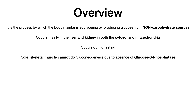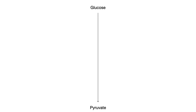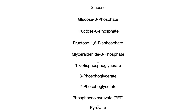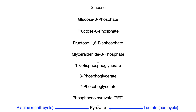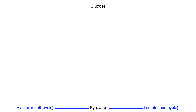The way to conceptualize gluconeogenesis is to think of it as glycolysis in reverse. In glycolysis, you start with glucose and end with pyruvate, with many intermediate steps most of which you don't need to know for USMLE or COMLEX. Pyruvate can then be shuttled to lactate through the Cori cycle or to alanine through the Cahill cycle. Those two cycles allow you to convert lactate or alanine back into pyruvate, and from pyruvate you can go back up to glucose, synthesizing glucose from a non-carbohydrate source.